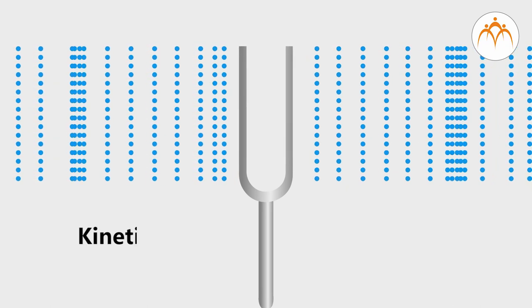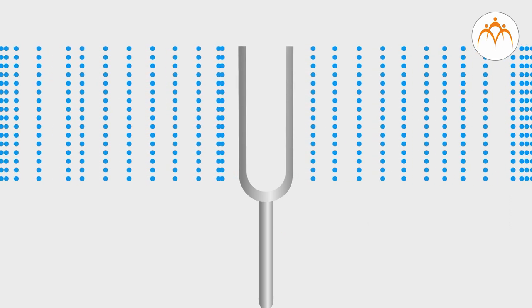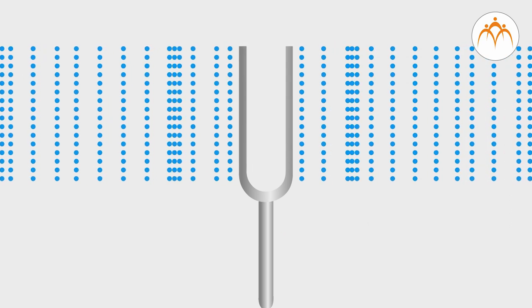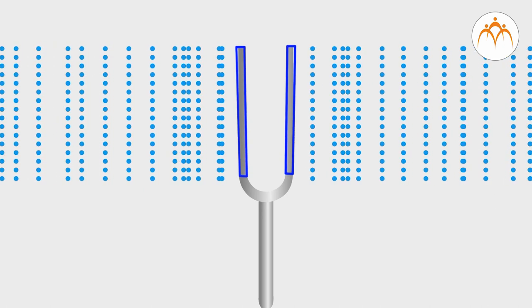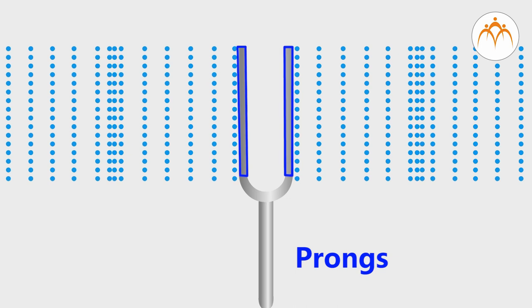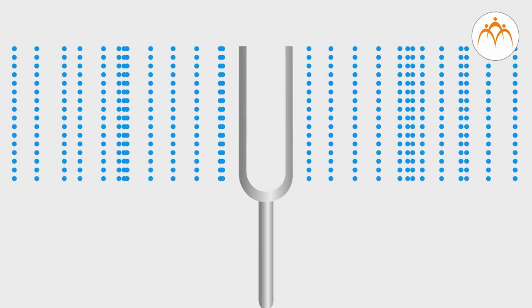Kinetic energy of air particles is converted into sound energy. If prongs vibrate at different rates, air particles will also vibrate at those rates. Air particles in all directions around the prong vibrate. That is why we hear sound in all directions.